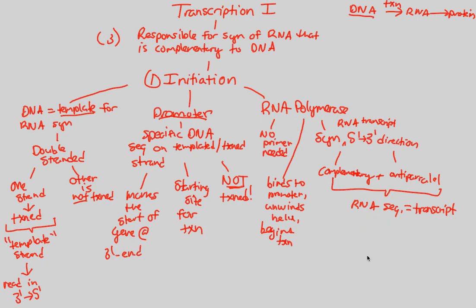Let's imagine a DNA sequence with a 5' end arranged as: A, T, G, A, C, T — and ending with a 3'. Since DNA is double-stranded, the complementary strand reads: T, A, C, T, G, A — closing with a 5' end. We're focusing on double-stranded DNA right now; our job is to figure out which strand is transcribed and which is not.